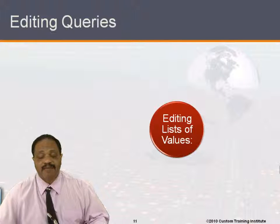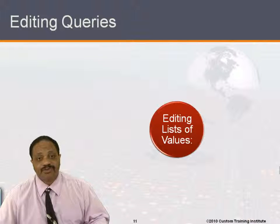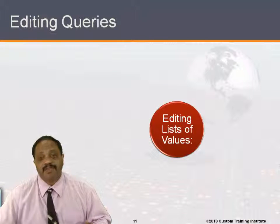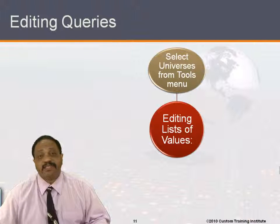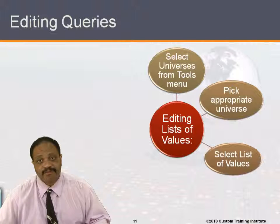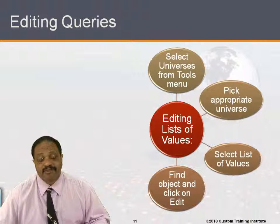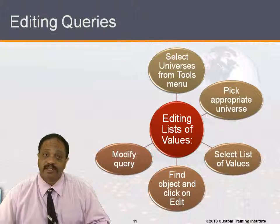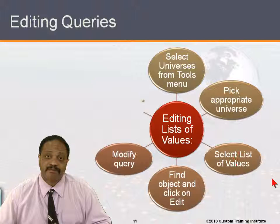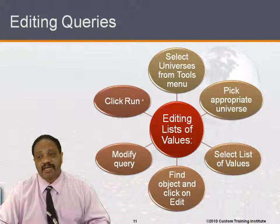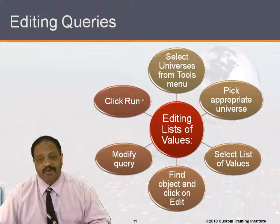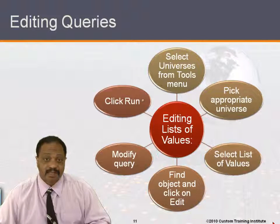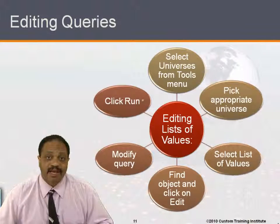We can also edit or modify a list of values to allow users to select from only a particular subset of values, commonly known as a pick list. To edit a pick list, select universes from the tools menu, pick the universe if necessary, then select list of values, find the object associated with the list, click edit, modify the query, and click run. It's also possible to modify a list of values directly if the query uses 'in list' with a list of values there.